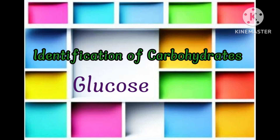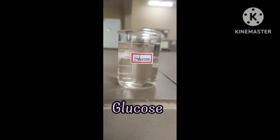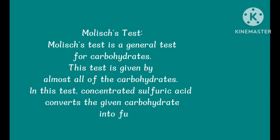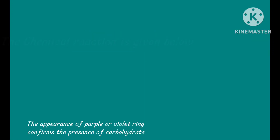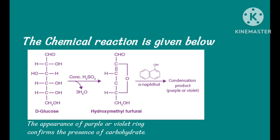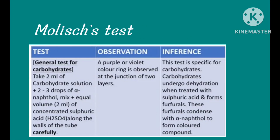Tests performed for identification of carbohydrates for sample glucose. Molisch test — it is a general test for carbohydrates, given by almost all carbohydrates. In this test, concentrated sulfuric acid converts the given carbohydrate into furfural, which then reacts with alpha-naphthol to form a purple color product. The appearance of a purple or violet ring confirms the presence of carbohydrates.